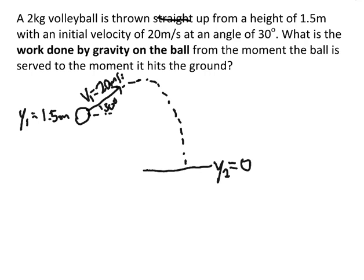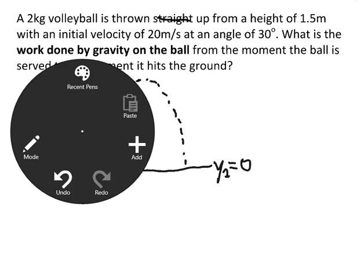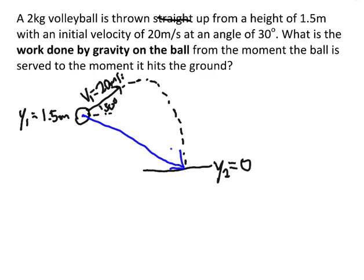The displacement is how far did the ball go from start to finish — so from the start position down to the ground. The force that the ball feels is going to be straight down, so I'm looking for the work done by gravity. Now this is actually a situation where it might be easier to find the component of your displacement that's parallel to gravity, and multiply that by the force of gravity.